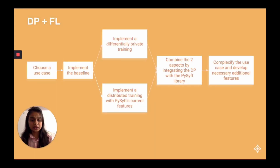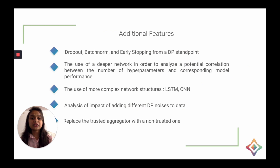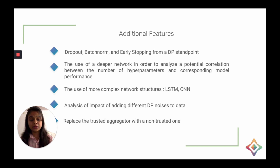Let's talk about how we can complexify the use case and develop additional features. These include implementing dropout, batch normalization, and early stopping from a DP standpoint; using a deeper network to analyze the correlation between number of hyperparameters and model performance; using more complex neural networks such as LSTM and CNN; analyzing the impact of adding different DP noise levels to data; and checking how model performance changes if we replace a trusted aggregator with a non-trusted one.